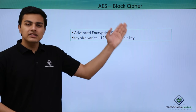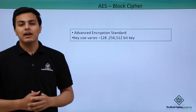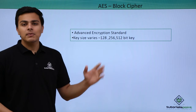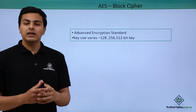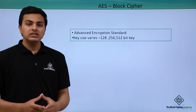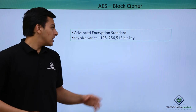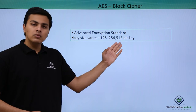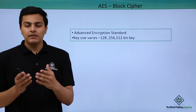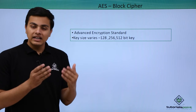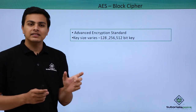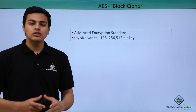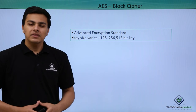Finally, there is AES — Advanced Encryption Standard — which is one of the most popularly used algorithms around the globe. It is one of the most powerful algorithms used for encrypting data because the key size of AES is 128 bits, 256 bits, or even 512 bits, and the block size matches the key size. That is why AES is considered one of the most powerful encryption algorithms in the world.